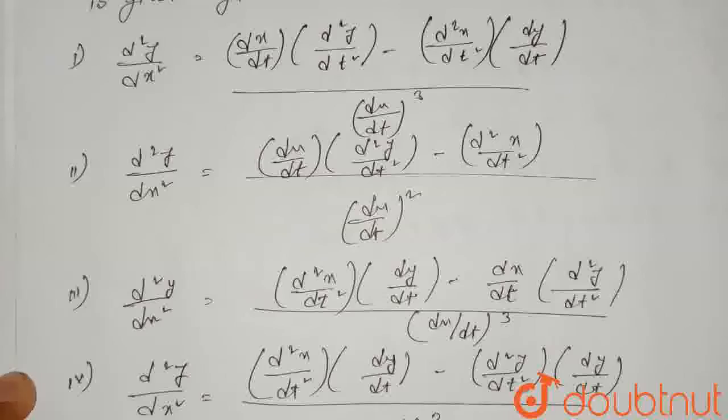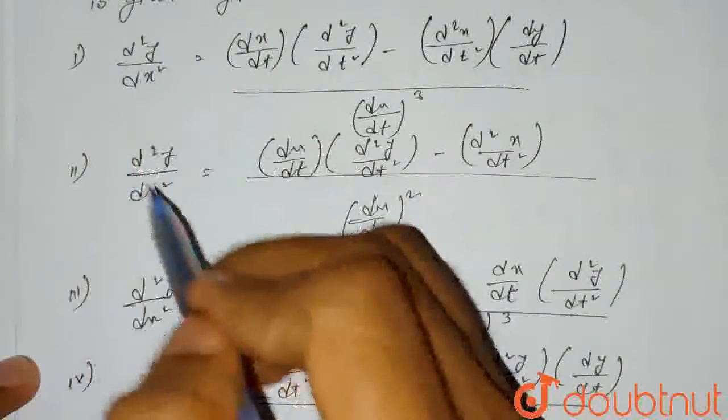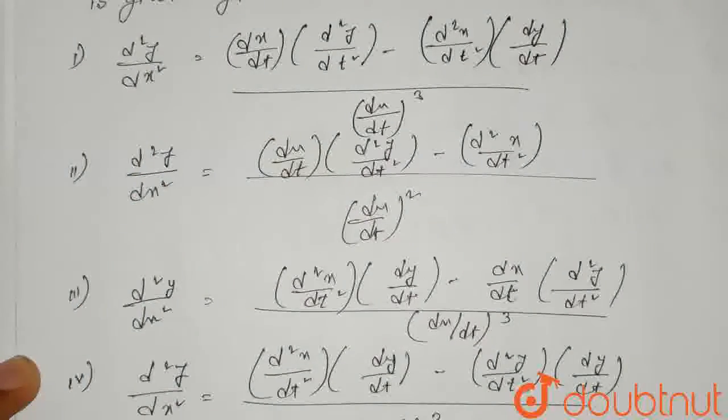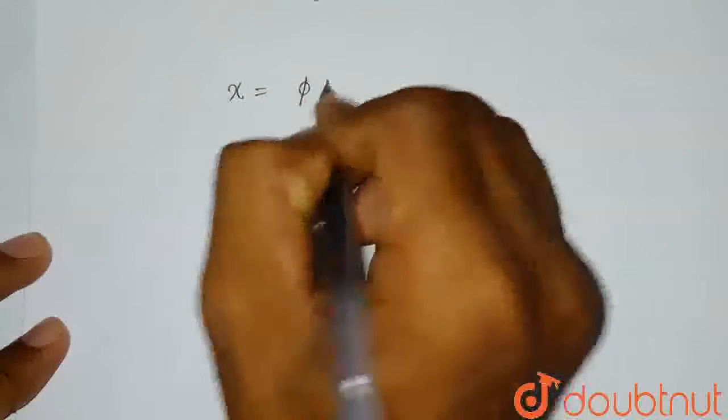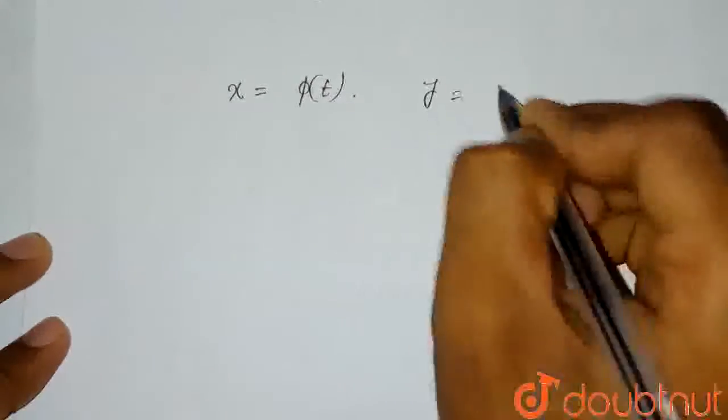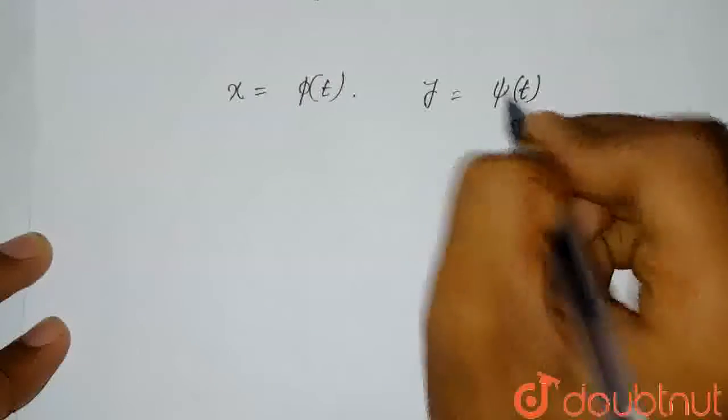We have to find the general value for d²y/dx² in case of these two x and y values. Here it is given that x equals φ(t) and y equals ψ(t). These are the two values given to us.